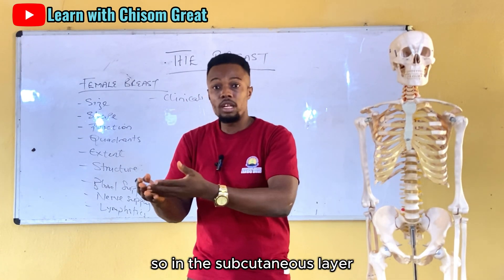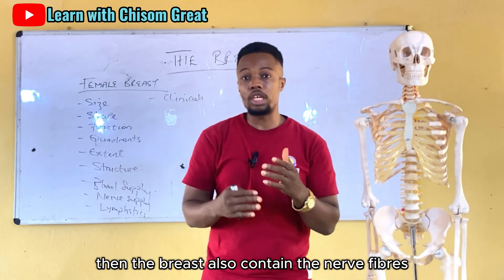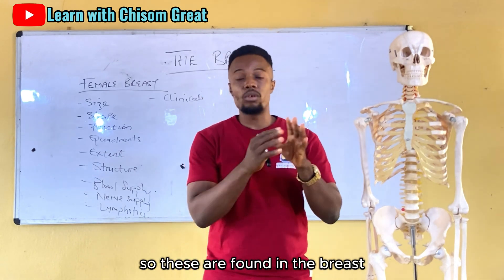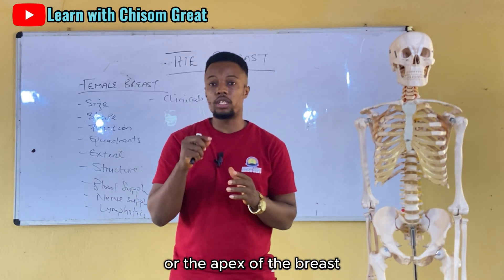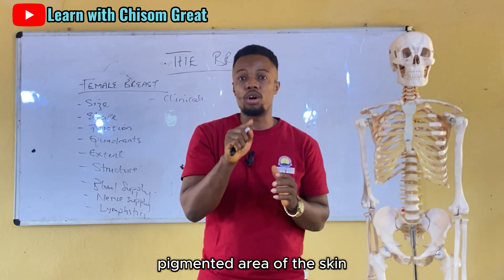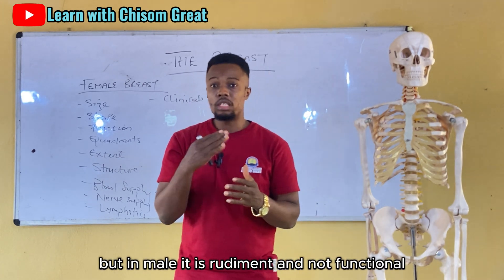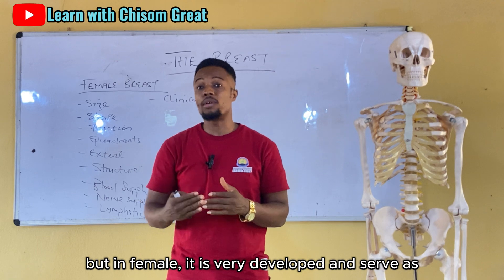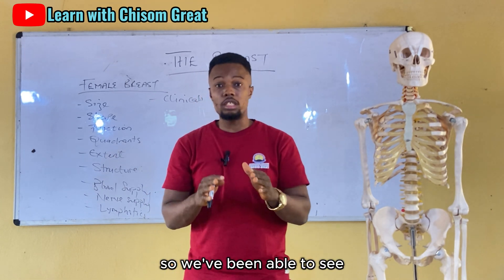In the subcutaneous layer there are fats that cover the glandular and fibrous tissues of the breast. The breast also contains nerve fibers, lymphatic vessels, and blood vessels. An important feature is the nipple — the pointed structure at the tip or apex of the breast — which is surrounded by a dark pigmented area of skin known as the areola. The mammary gland or glandular tissue is rudimentary and non-functional in the male, though it has some epithelial cords, while in the female it is well developed and serves as an accessory reproductive organ.